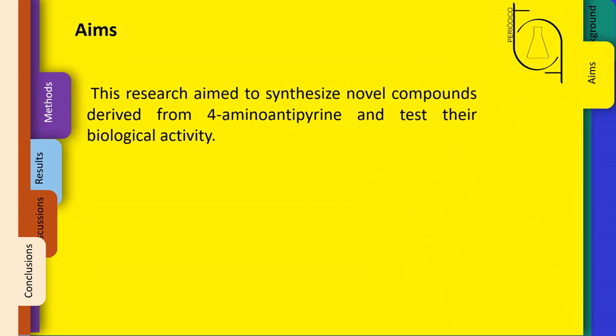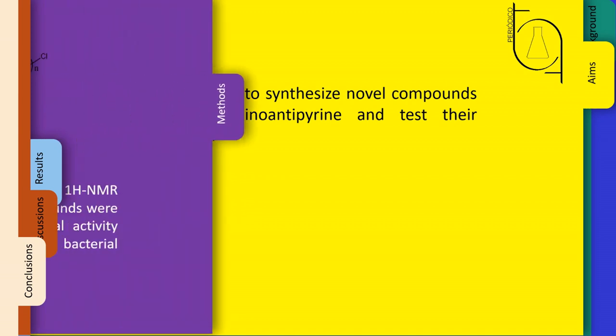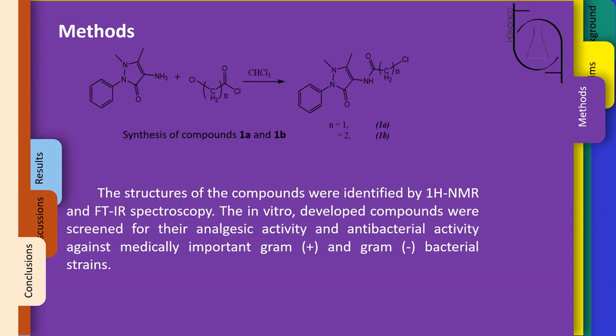Aim: This research aimed to synthesize novel compounds derived from 4-aminoantipyrene and test their biological activity. Methods: Synthesis of 4-aminoantipyrene derivatives which contain structurally two heterocyclic moieties, pyrazolone with oxidiazole, triazole, or tetrazole rings.